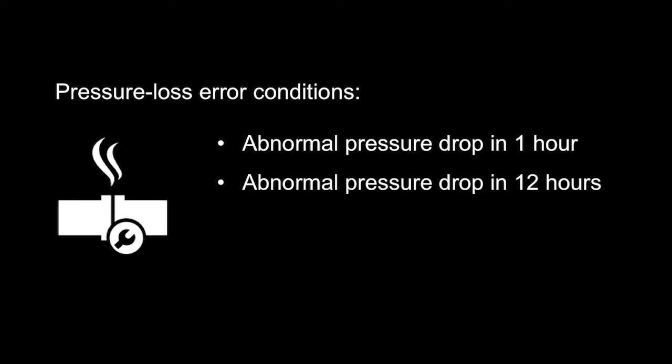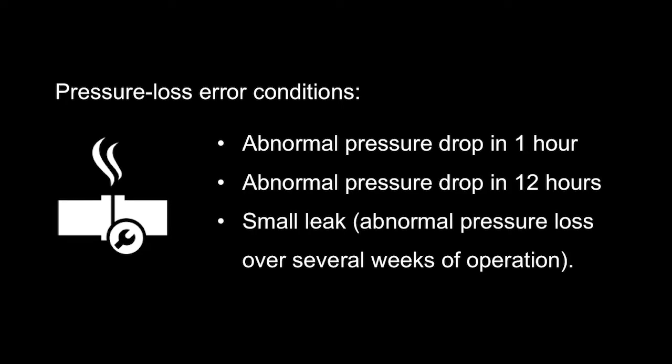Small leaks of calibration gas may be detected by watching for any of the following pressure loss error conditions that are based on readings from the calibration gas pressure sensor. Abnormal pressure drop in 1 hour. Abnormal pressure drop in 12 hours. Small leak, abnormal pressure loss over several weeks of operation. It is recommended that you watch for these errors soon after installing or changing the calibration gas cylinder, and that you contact Morgan Schaefer for assistance if they appear.